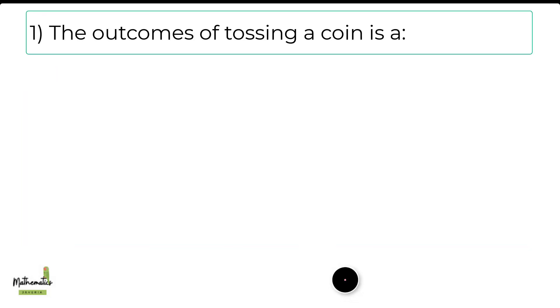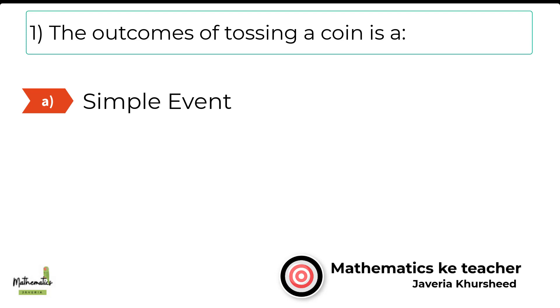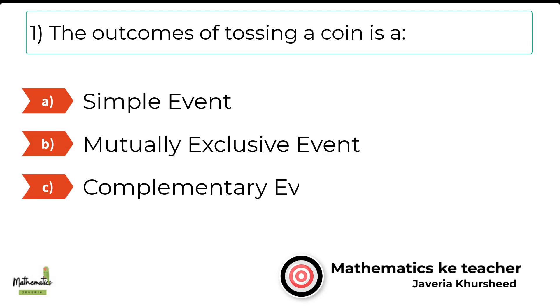Number 1. The outcomes of tossing a coin is: A. Simple event. B. Mutually exclusive event. C. Complementary event. D. Compound event.